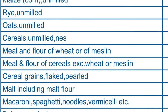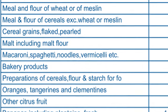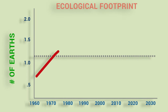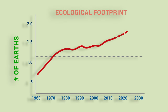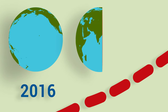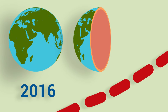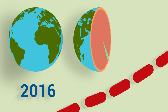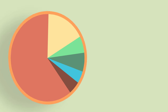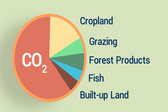Our footprint accounts are based on nearly 200,000 data points per country per year. Data has been compiled since 1961, allowing users to track trends over time. Most nations have seen their ecological footprints go up, so that today the human population worldwide is using 1.6 times more natural resources and services than our planet can regenerate in a year. Carbon is the largest contributor to our ecological footprint globally.